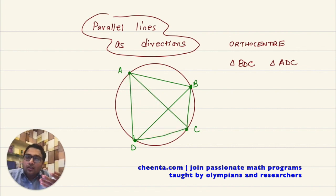So what is the meaning of orthocenter? It is the intersection point of the altitudes of a triangle. And let me draw one. You will see what I mean. So I'll draw the orthocenter of BDC first.